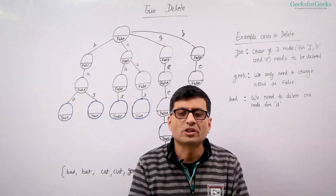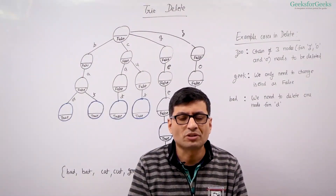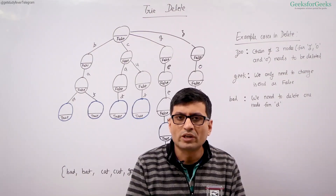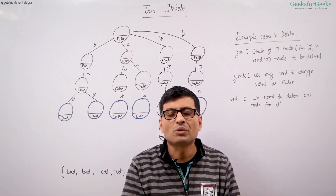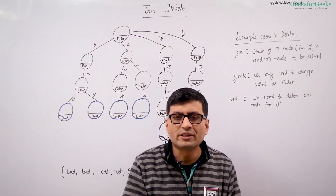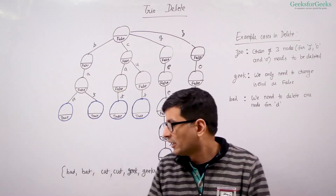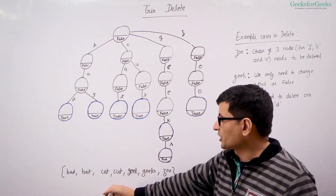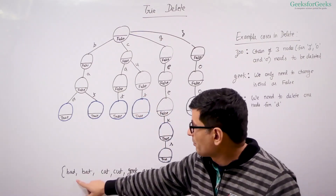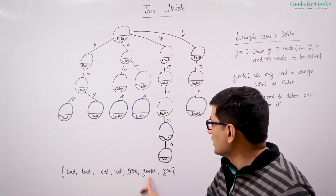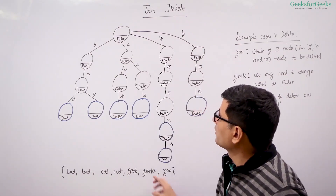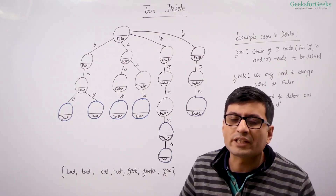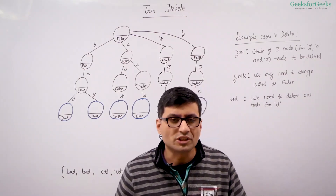Let us now talk about delete operation on trie. We are given a trie and a word to be deleted from this trie. We want to delete the word from this trie. Let's consider this trie that represents this dictionary: bad, bat, cat, cut, geek, geeks, and zoo. This is the trie and let's consider different cases of word deletions.